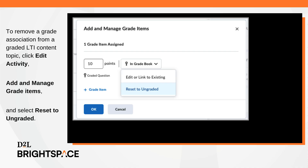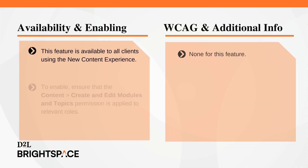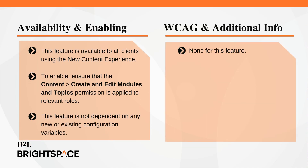To remove a grade association from a graded LTI content topic, click Edit Activity, Add and Manage Grade Items, and select Reset to Ungraded. This feature is available to all clients using the New Content Experience. To enable, ensure that the Content Create and Edit Modules and Topics permission is applied to relevant roles. This feature is not dependent on any new or existing configuration variables.